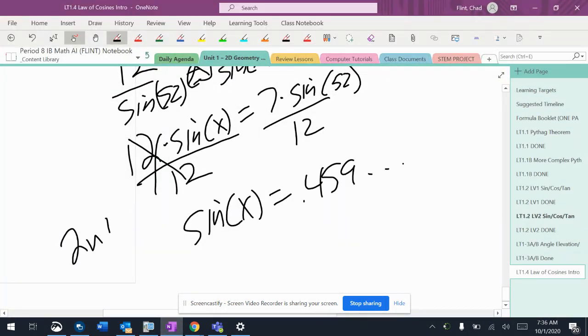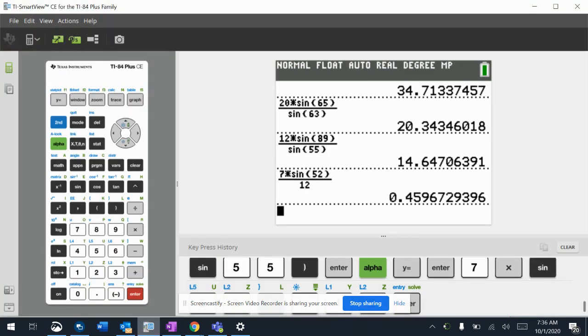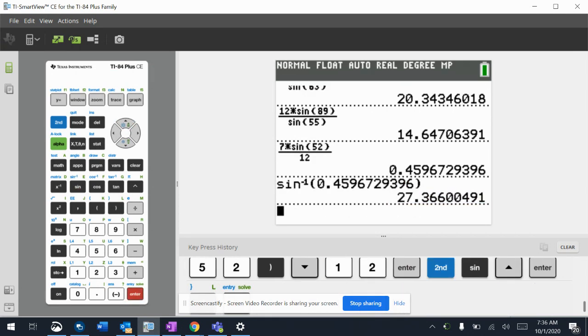And remember to get an angle, hit second, and then sine, and then put that decimal in there. So second sine, go up and grab the decimal. 27.366.